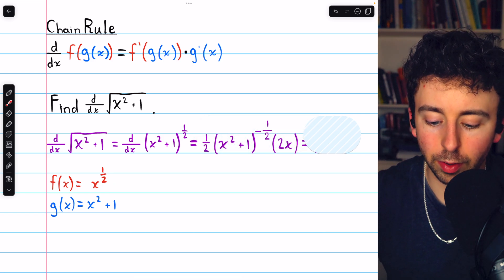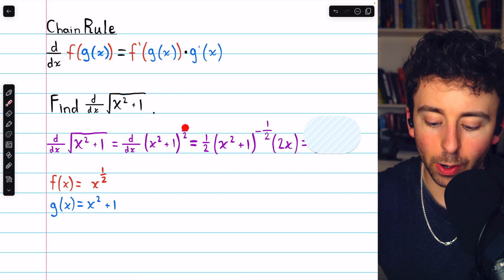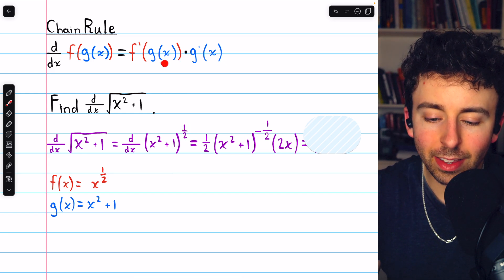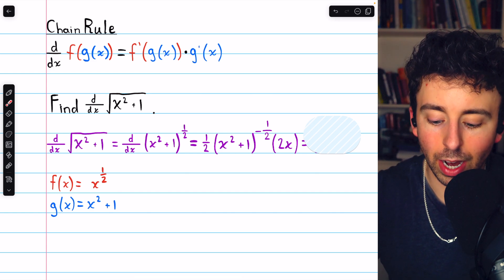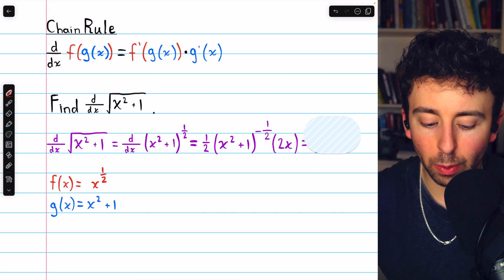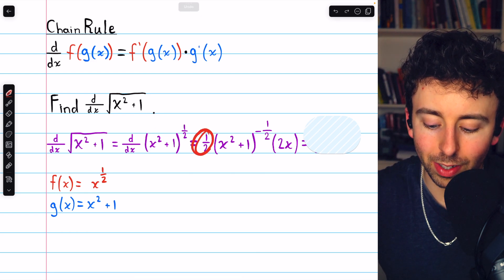Then jumping into the derivative, we begin with f prime of g of x. So, the derivative of the outside function, leaving the inside function unchanged. The derivative of something to the power of 1 half requires us to use the power rule. So that 1 half comes down in front as a factor, which we see there.